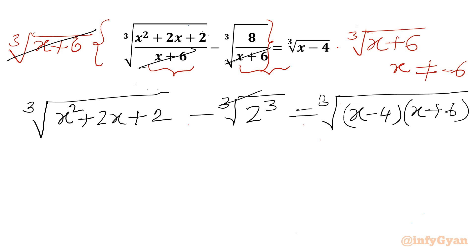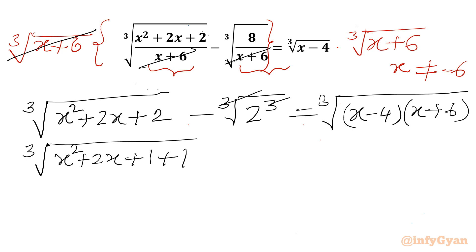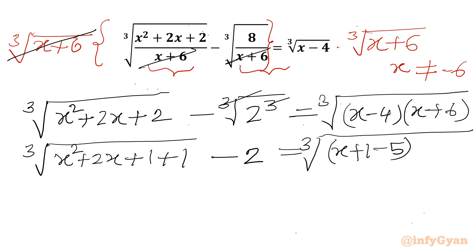Now the cube root and cube cancel. So we can write cube root of (x² + 2x + 1 + 1), splitting the 2 as 1 + 1, minus 2 equal to cube root of (x + 1 − 5) times (x + 1 + 5). Here (x − 4) is (x + 1 − 5) and (x + 6) is (x + 1 + 5).